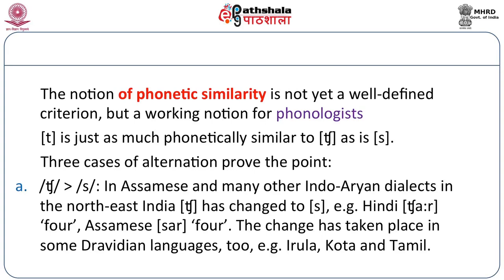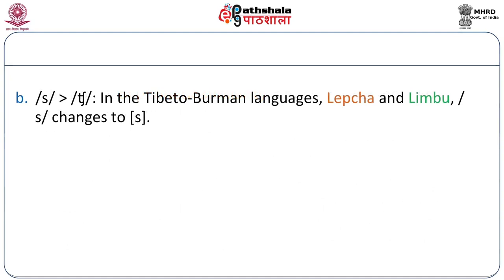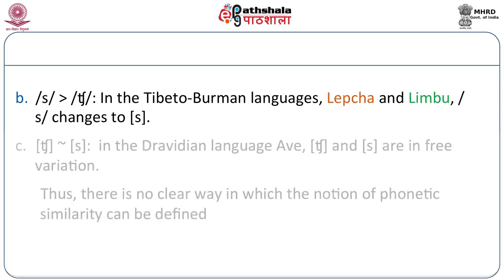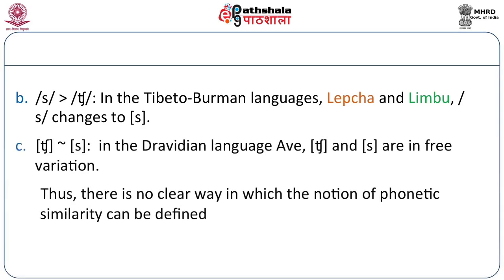For example, in Assamese, a general change has taken place: the sound /tʃ/ found in other Indo-Aryan languages has changed to /s/. Thus, /sa/ and /tʃa/ are phonetically close to each other. In some languages, such as Awe, it is /sa/ which becomes /tʃa/—the opposite of the process in Assamese. Thus the notion of phonetic similarity does not seem to be very well defined.